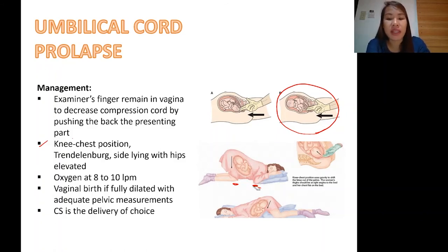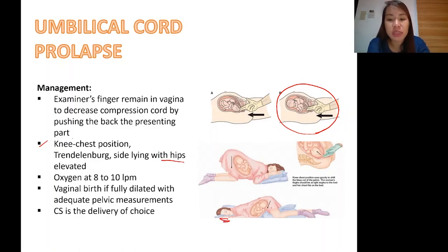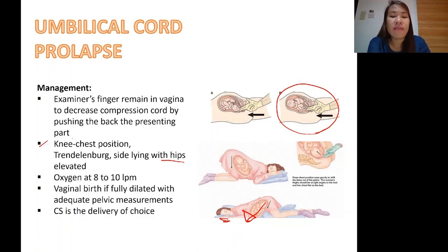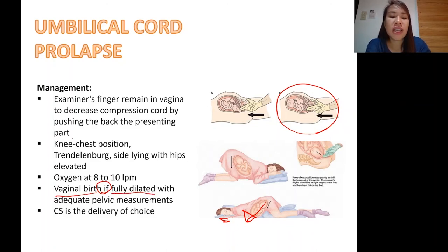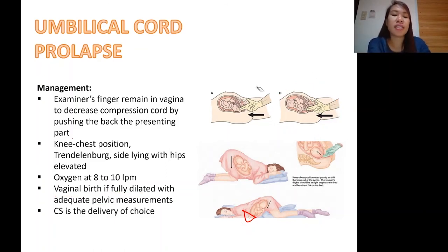Another option is side-lying with the hips elevated, which works similarly to the knee-chest position. The weight of the baby shifts due to gravity, relieving compression on the cord. Additionally, we give the mother oxygen at 8 to 10 liters per minute, because giving the mother oxygen also delivers oxygen to the baby. Vaginal delivery may be done only if the cervix is fully dilated and with adequate pelvic measurements. If not, our delivery of choice is cesarean section.